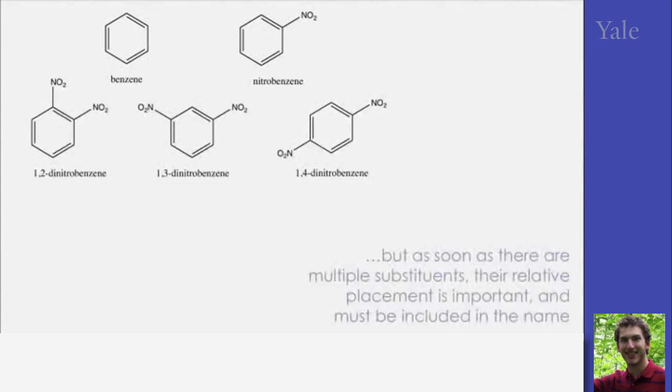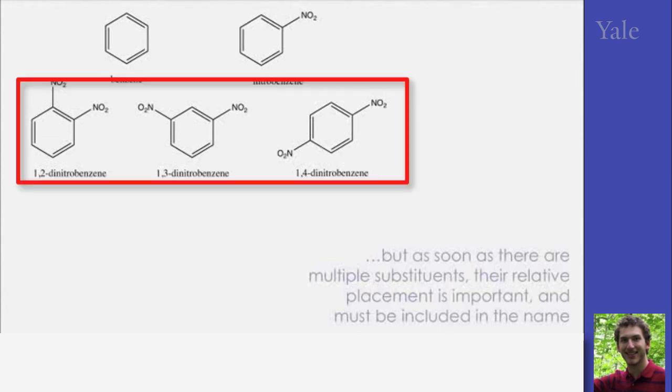As soon as there are multiple substituents, their relative placement is very important. So we have to distinguish between 1,2-dinitrobenzene and 1,4-dinitrobenzene. These molecules, these isomers, are different compounds and have different properties.